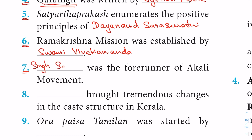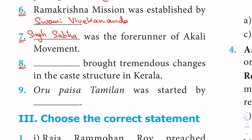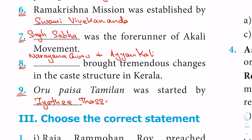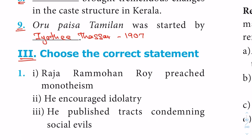Question 6: Ramakrishna Mission was established by blank — Swami Vivekananda. Question 7: Blank was the forerunner of the Akali movement — Singh Sabha. Question 8: Blank brought tremendous changes in the caste structure in Kerala — Narayana Guru and Ayyankali. Question 9: Ippozhai Tamilan was started by blank — Iyothee Thass, in the year 1907.